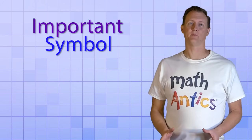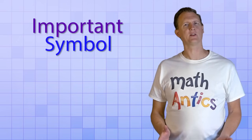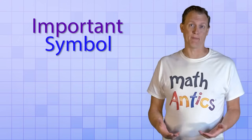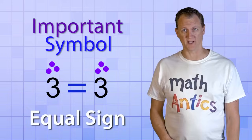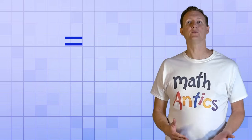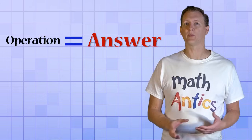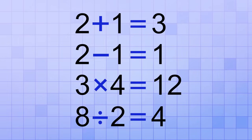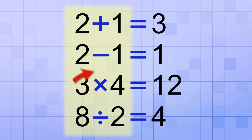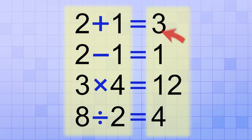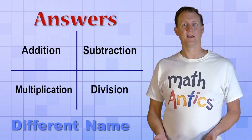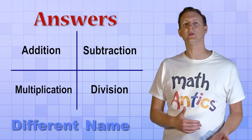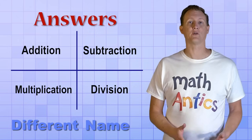There's one other really important symbol that we use all the time in arithmetic. But it doesn't tell us what to do with numbers — instead, it tells us about them. Specifically, it tells us that two amounts are equal, which is why it's called the equal sign. In arithmetic, the equal sign is used to show what the answer is to an operation or a set of operations. On one side of the equal sign, you show the math operations that need to be done. And on the other side, you show the answer you get once they have been done. And did you know that the answers for each of the four arithmetic operations gets a different name? It's important to learn those names, because they'll help you when you need to read math instructions or when you're solving word problems.